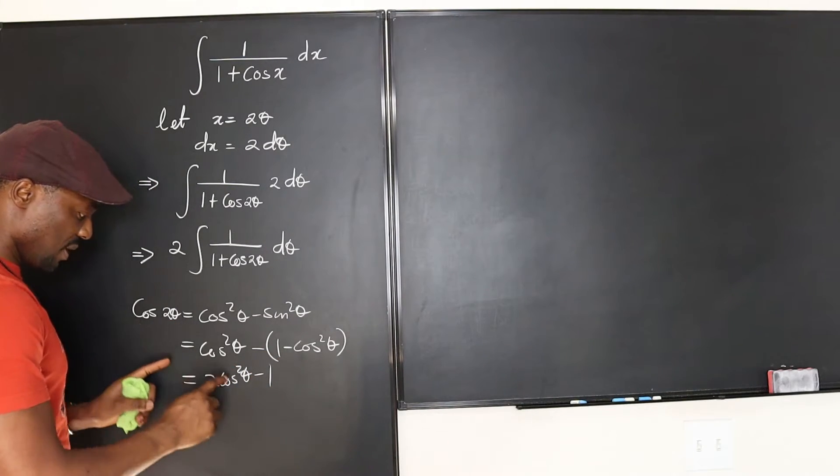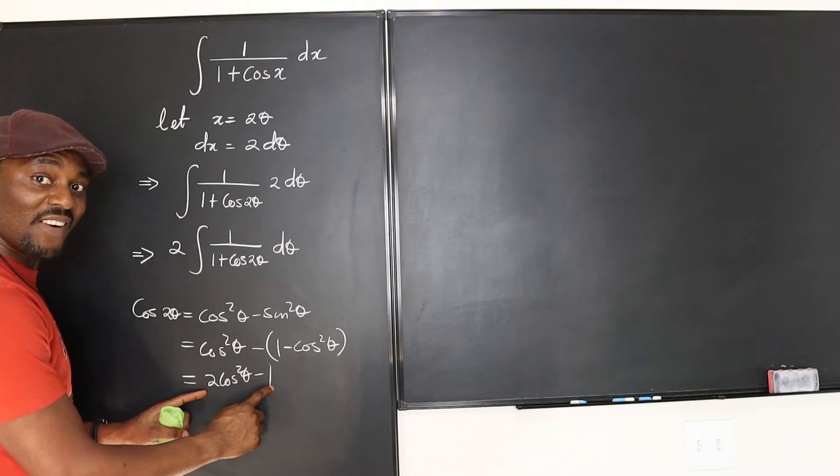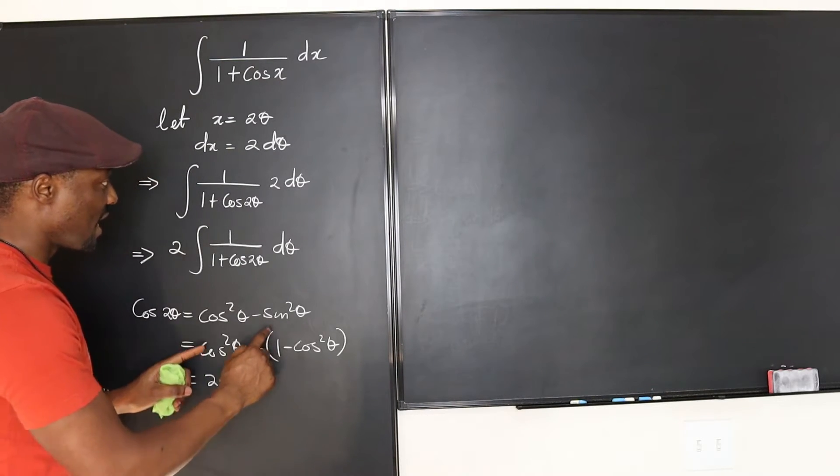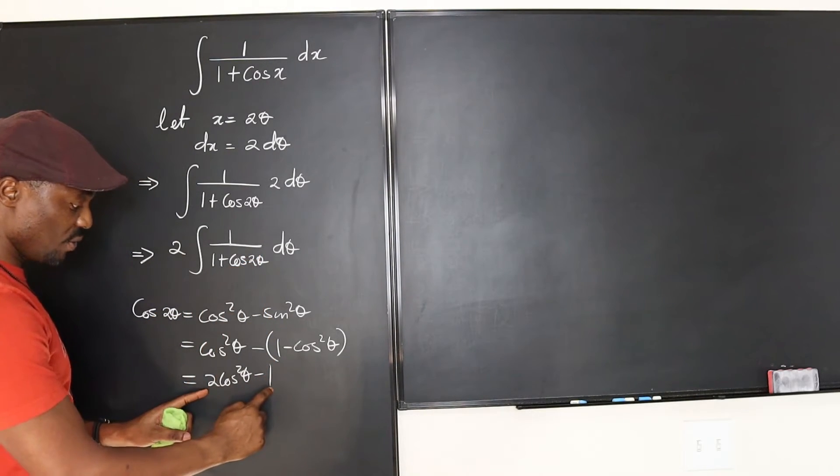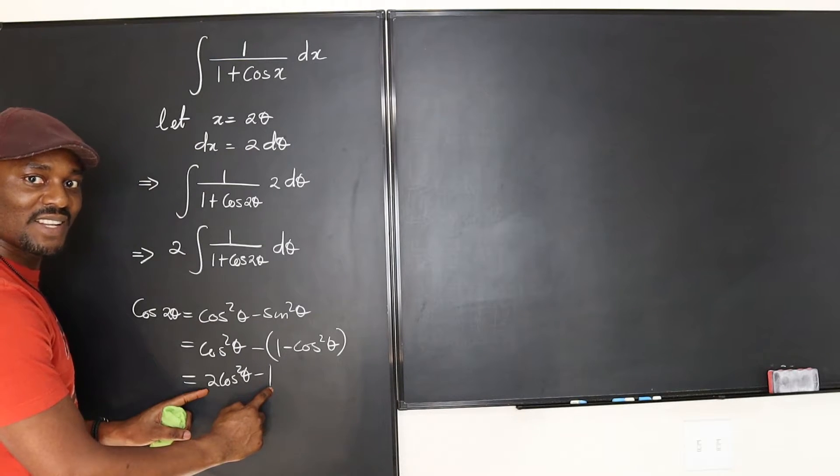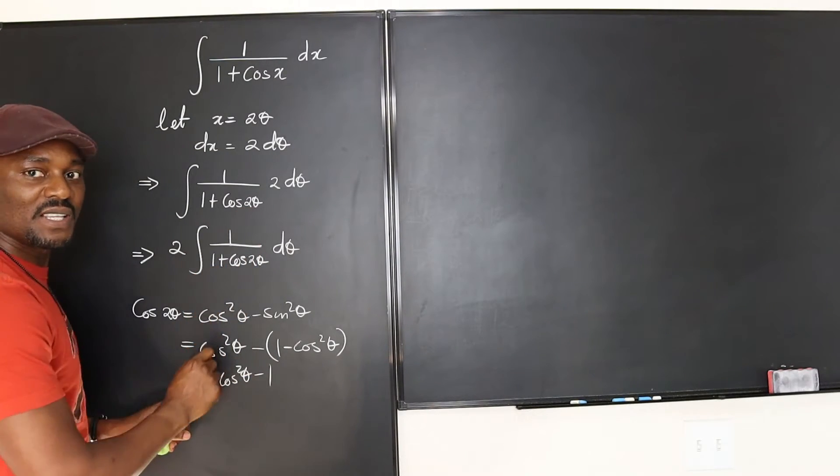So it means we can replace, oh, it looks good now. We can just go here now and replace this expression with 2 cosine squared theta minus 1. I said so. Okay? These numbers are easy to deal with.